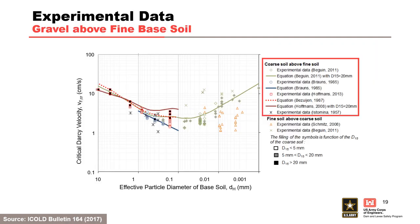Guido et al. in 2010 measured critical Darcy velocities for gravel above sands, silts, and sand-clay mixtures. Experimental results for the critical Darcy velocity range from 1 to 10 centimeters per second, with the minimum of 1 centimeter per second corresponding to a particle diameter of 0.1 millimeters. This figure was edited from the original by reversing the order of the x-axis and using centimeters per second instead of meters per second for the y-axis.